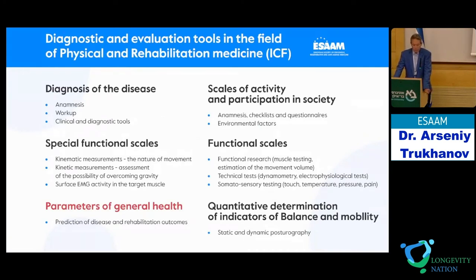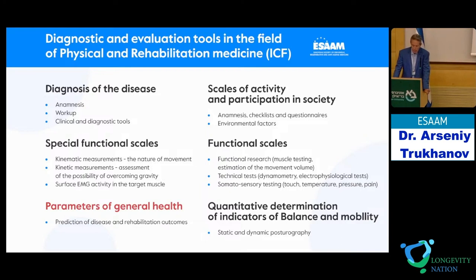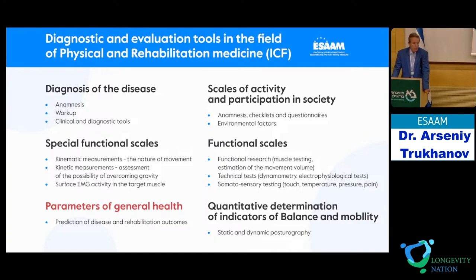Looking at the main instruments of the International Classification of Functioning — the basic method for physical and rehabilitation medicine — we can see that to estimate the status of health we need to use different scales: diagnosis of the disease, special functional scales, scales of activity and participation in society, quantitative determination of balance and mobility, and the most important parameters of general health, which means prediction of disease and prediction of outcomes of rehabilitation. The goal of anti-aging medicine is also prediction of disease.